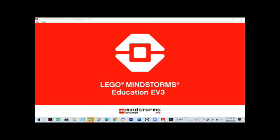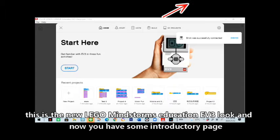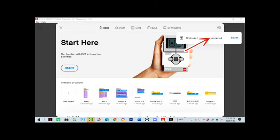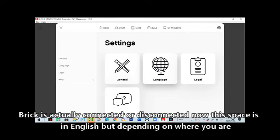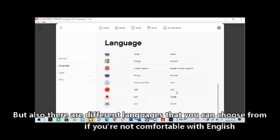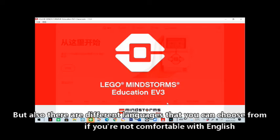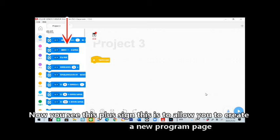You already have this red icon with this new look. This is the new Lego Mindstorms Education EV3 look, and now you have some introductory pages. When you have a brick connected to your computer or device, it will let you know if the brick is actually connected or disconnected. This space is in English depending on where you are, but there are also different languages that you can choose from. You see this plus sign, which allows you to create a new program page.